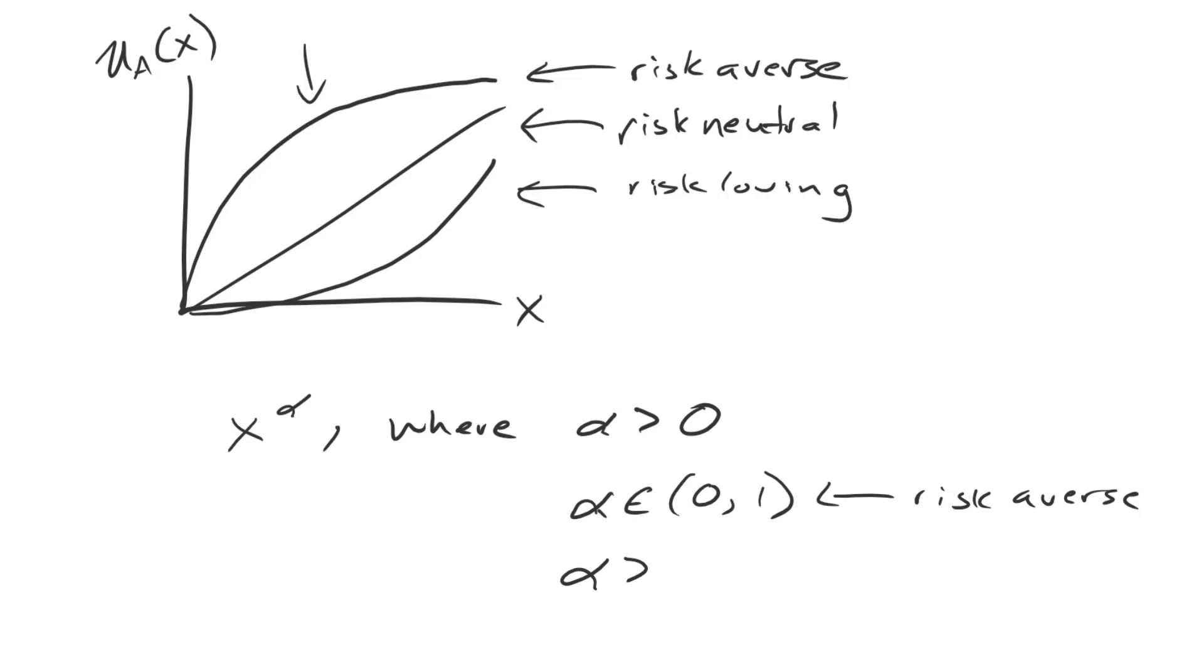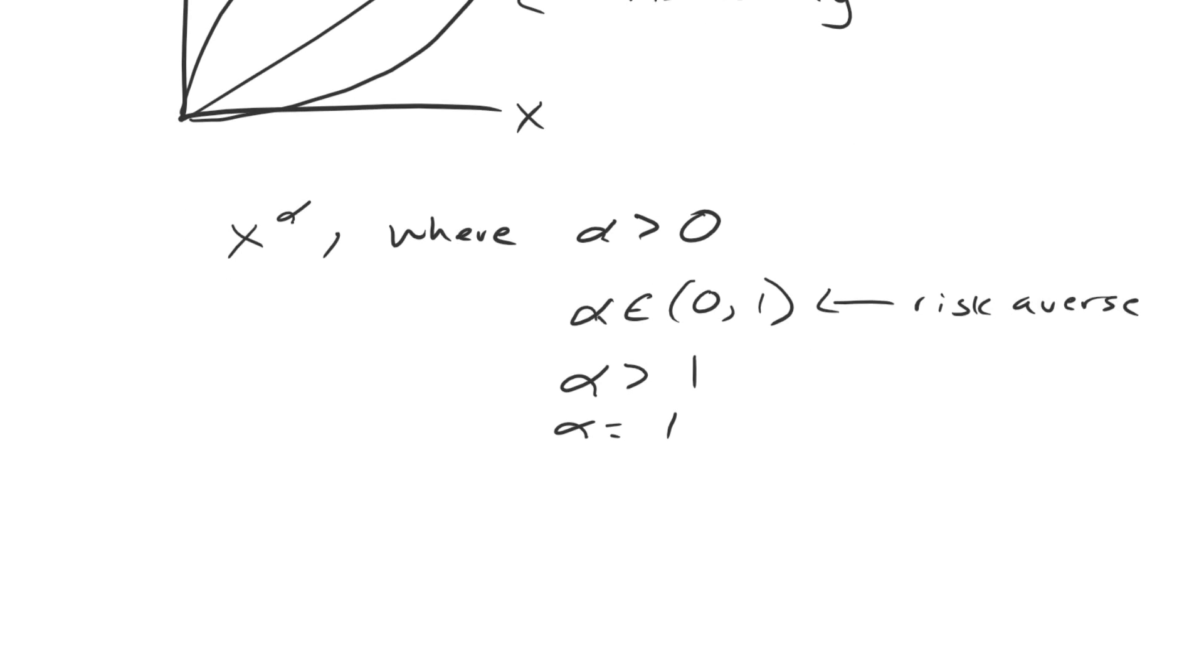If you have alpha greater than one, then we're up here with risk-loving. And when alpha is exactly equal to one, well, if you think about what that looks like, if you're raising X to the one power, that's just equal to X, and that takes us to our original case.